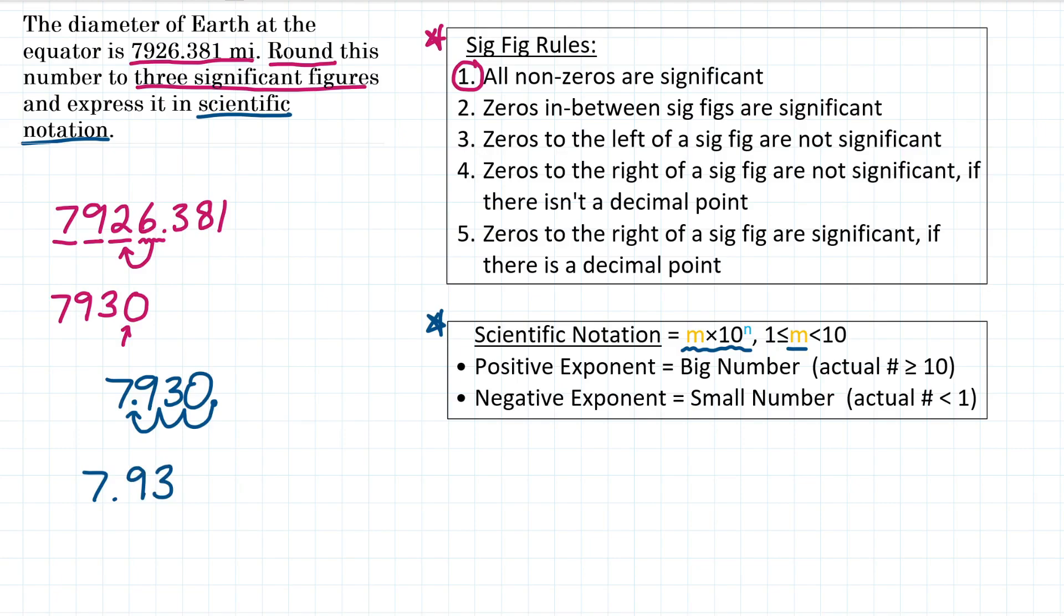That is our m number that goes in the first part of the scientific notation. And notice we did not keep that zero there in our scientific notation because it is not significant. It was just a placeholder. So we do not put that in our scientific notation.